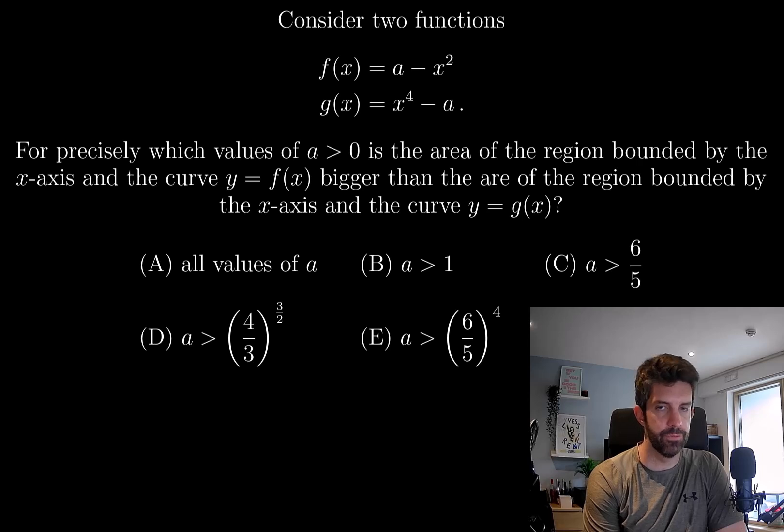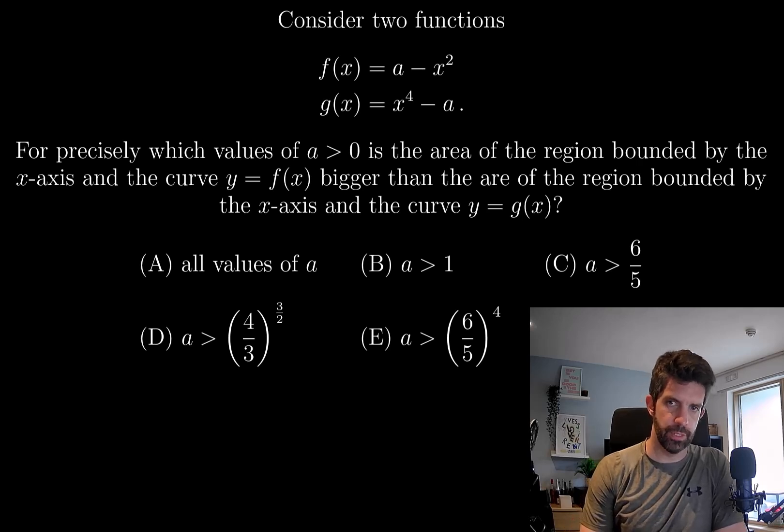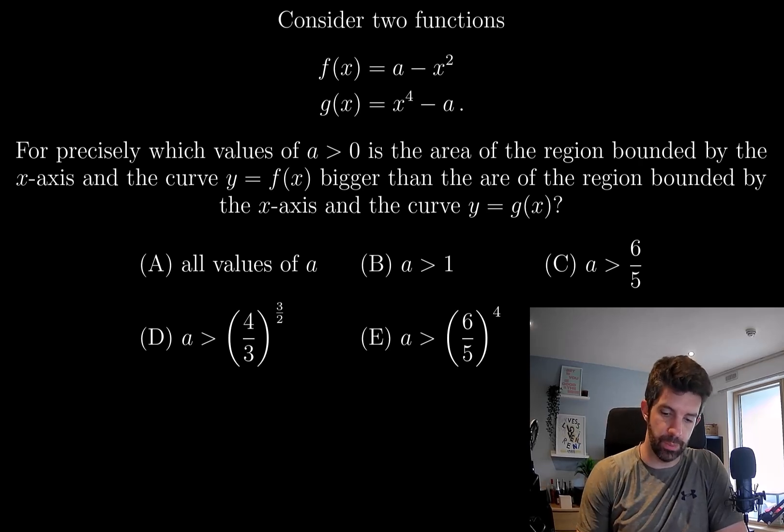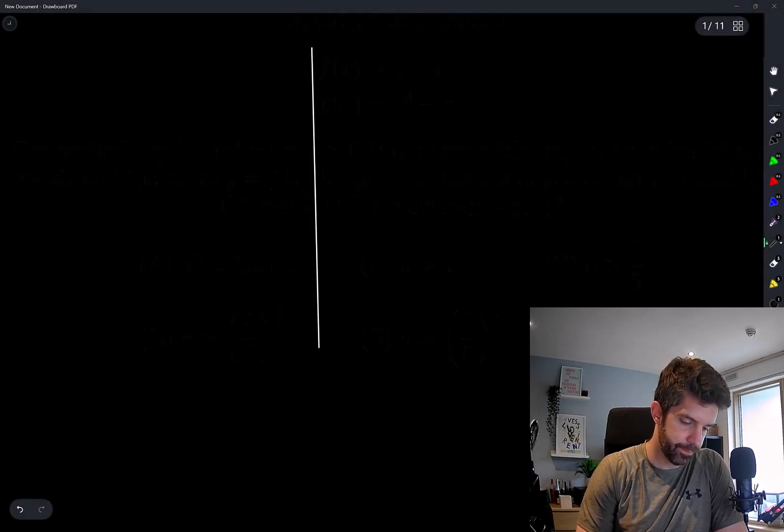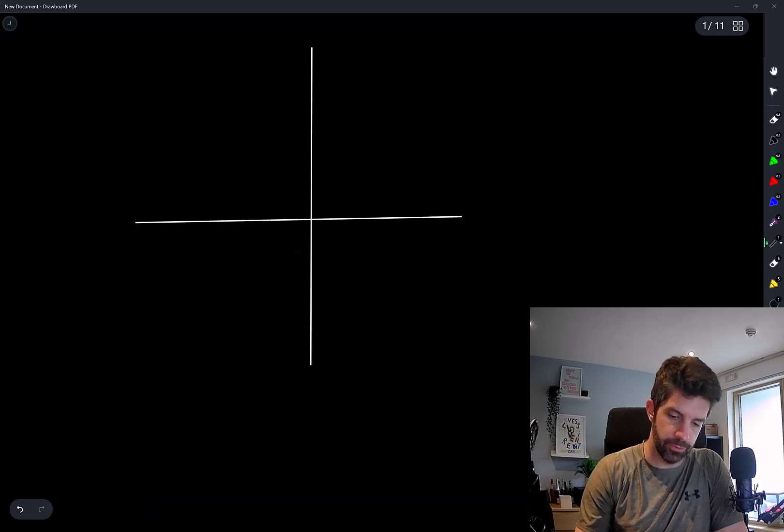We have various conditions on the value of a here. So we're essentially integrating these two functions. First we have to find where these functions are equal to 0, and then... Let's just think of what these functions look like.